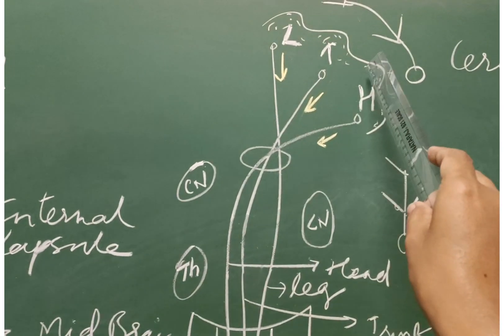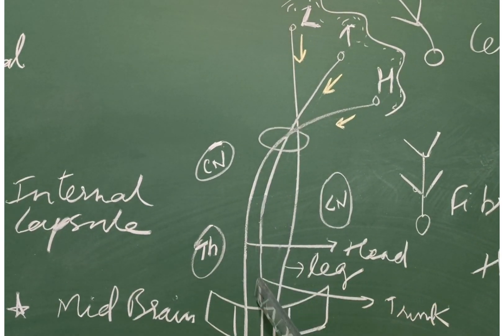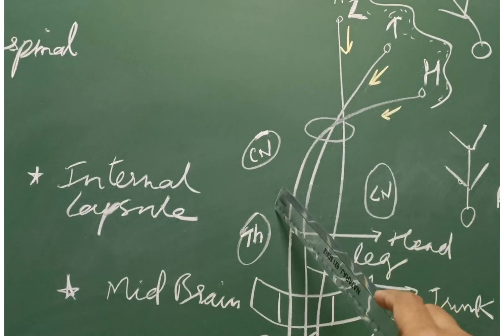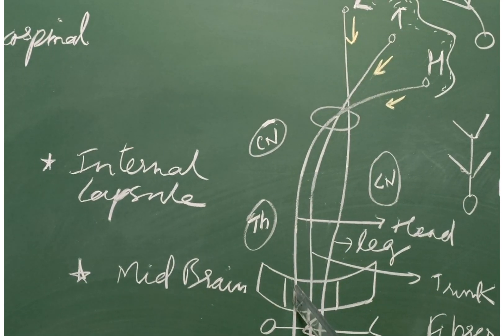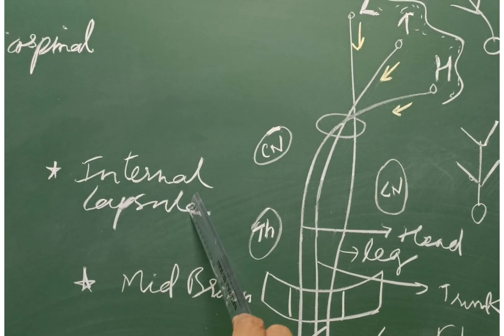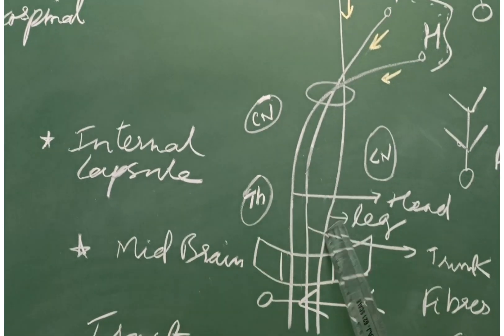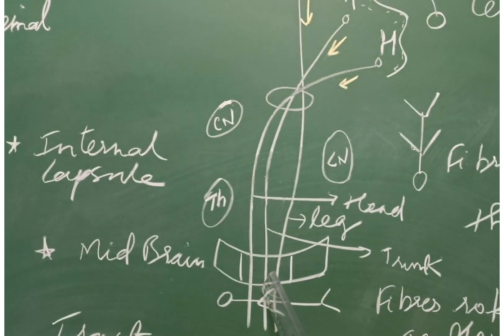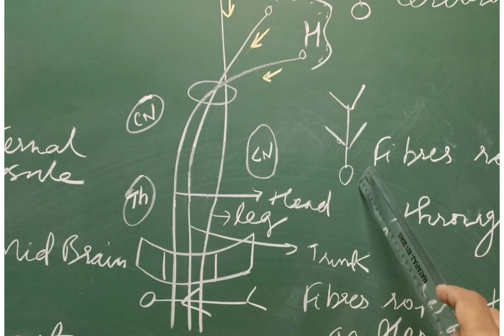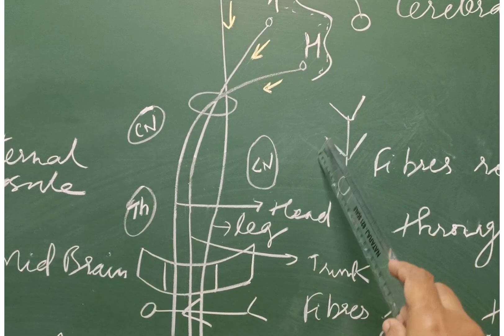While descending down in the internal capsule, these fibers undergo rotation through 90 degrees. Thus, in the internal capsule, the head fibers now lie anteriorly, the trunk fibers lie medially, and the leg fibers occupy the posterior position. They occupy the genu and anterior two-third of the posterior limb of the internal capsule.